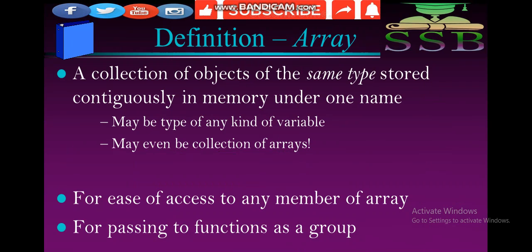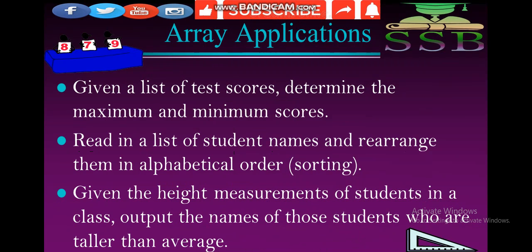A collection of objects of the same type stored continuously in memory under one name. It may be of any kind of variable, or may even be a collection of arrays. Arrays are used to access any number of elements and for passing groups to functions. This is the basic definition — a collection with the same type under one name. Let's see some Array applications.